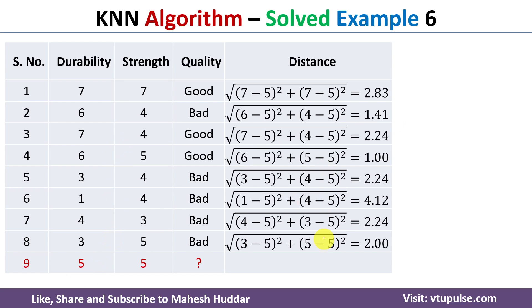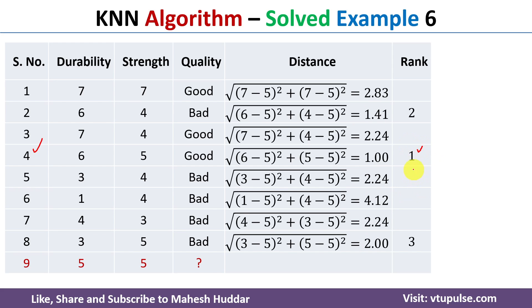Once all distances are calculated, we assign ranks based on distance — the closest example gets rank 1. Training example 4 has a distance of 1, which is the minimum, so it is given rank 1. Training example 2 has distance 1.41, giving it rank 2, and the 8th example is given rank 3.